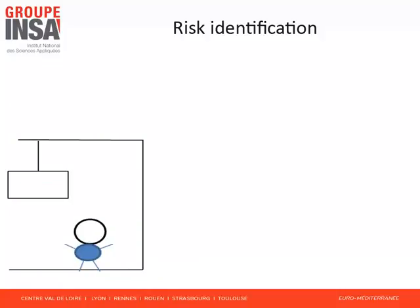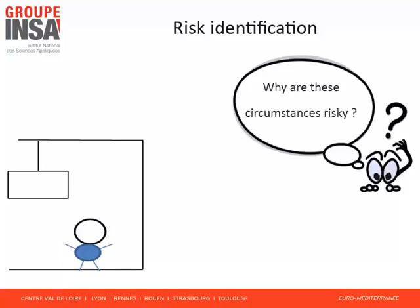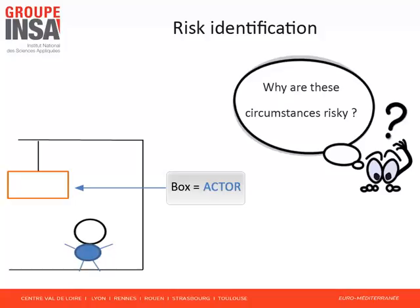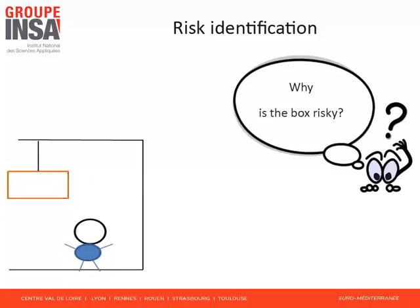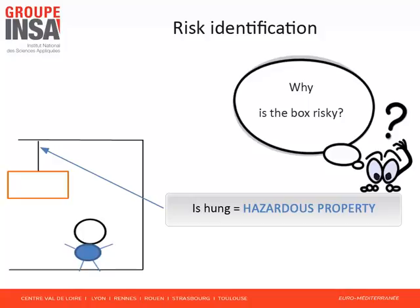To present a first risk identification model, reconsider the following circumstances: a person is in a garage where a box is hung on the ceiling. Why are these circumstances risky? Because of the box — the box is the source of the risk; we will call the box an actor. Why is the box risky? Because the box is hung, it is suspended above the ground. The risk comes from this property. If the box is put on the floor, there is no risk. Being hung, the box may fall down and injure people.